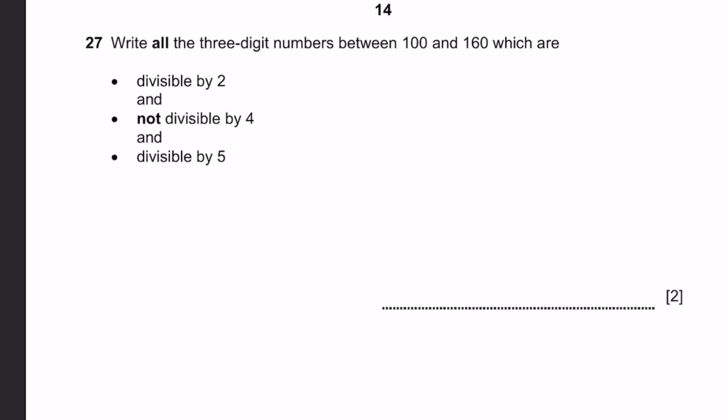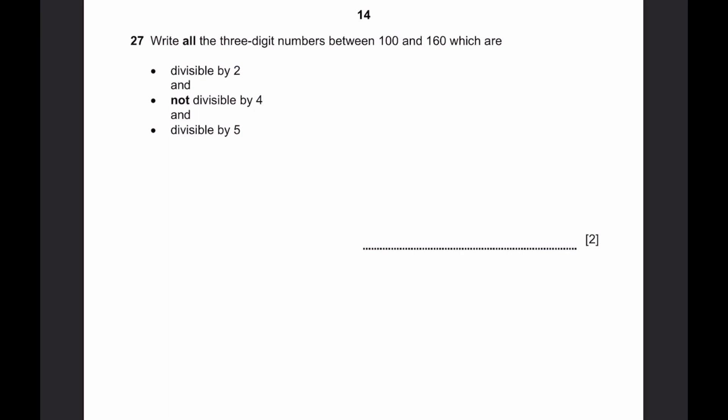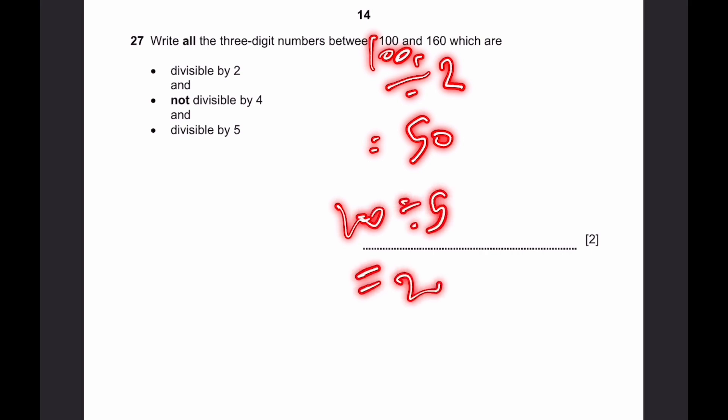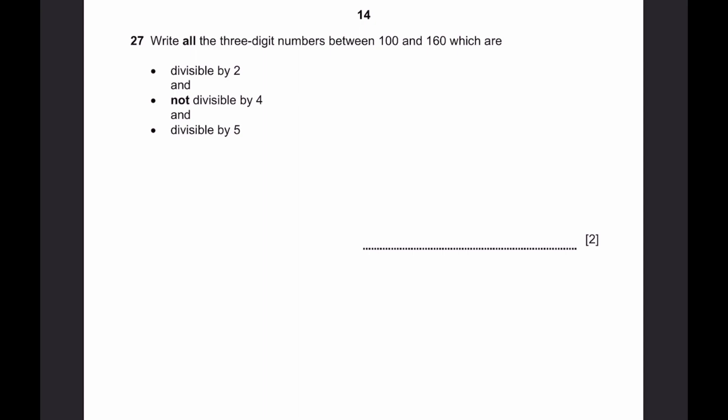Question 27. Write all the three digit numbers between 100 and 160 which are divisible by 2 and not divisible by 4 and divisible by 5. So it should be divisible by 2 and 5, but not by 4. That means there must be multiples of 10. Only multiples of 10 can be divided by both numbers at the same time to get whole number answers. Let's check. 100 divided by 2 is 50. 100 divided by 5 is 20. 100 divided by 4, though, is 25. And we do not want a whole number answer. It's not 100. The same thing applies for 120, 140, and 160. So the only numbers which are there are 110, 130, and 150.